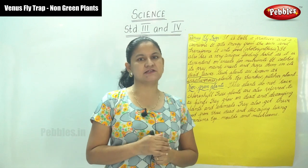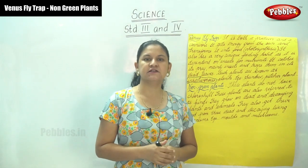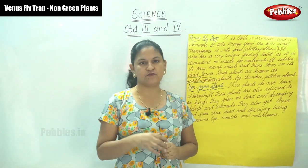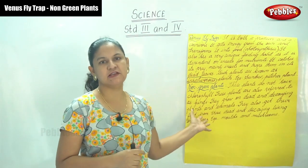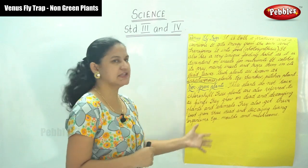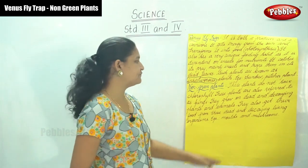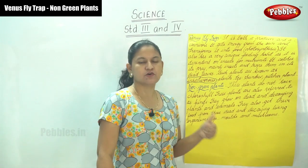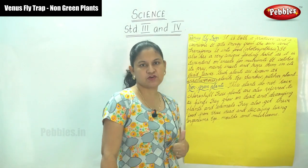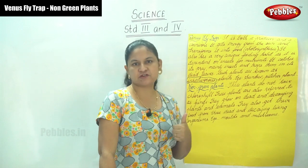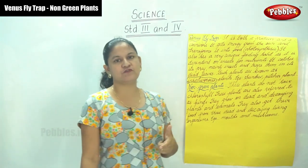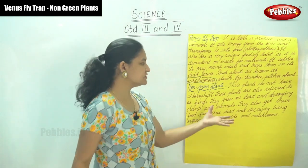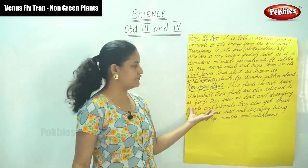Normally we see plants that are green in colour, and the colour green is because of the presence of chlorophyll. But now we are going to see plants that are non-green — that is, not green in colour. These plants do not have chlorophyll. Only if there is the presence of chlorophyll can a plant have its green colour; in the absence of chlorophyll, a plant does not get its green colour.